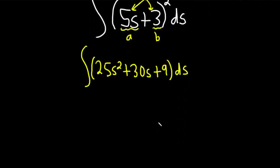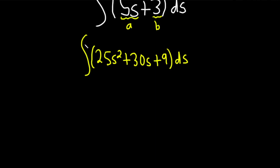And so now we can integrate. So when we do that we drop the integral sign. So the 25 is a constant so it stays in front of the s squared. We have 25 and then to integrate the s squared you add 1 to the exponent so you'll get 3 and then you divide by the result plus 30.